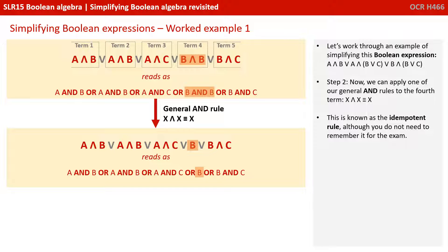Step two: Now we can apply one of our general AND rules to the fourth term. X and X equals X. This is known as Idempotent rule, although you don't need to know this for the exam.